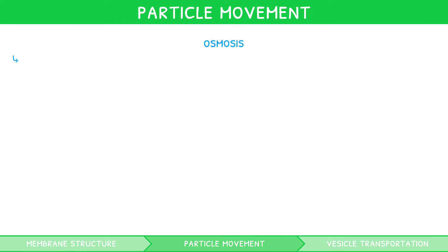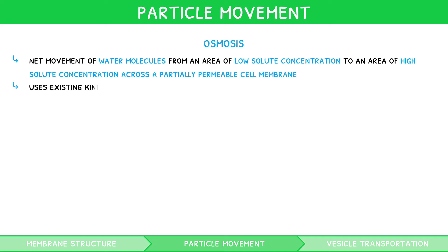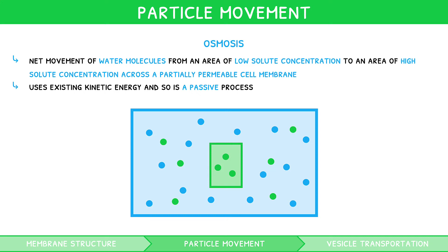Osmosis is the net movement of water molecules from an area of low solute concentration to an area of high solute concentration, across a partially permeable cell membrane. It too uses existing kinetic energy and so is a passive process. For example, water moving into a potato.